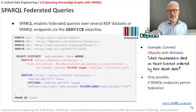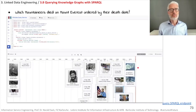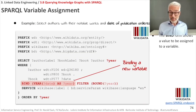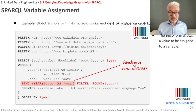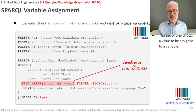So that was a federated SPARQL query. What else can we do? In SPARQL we can directly assign variables and then use them for further filtering or more complex operations. The next example selects authors, their notable works, and the publication date — ordering simply by the year of publication, not necessarily the entire date.